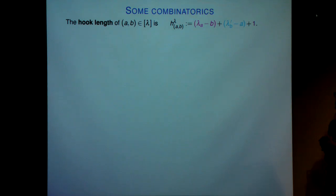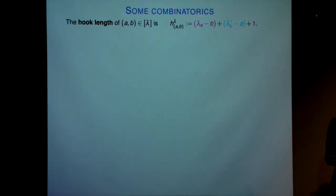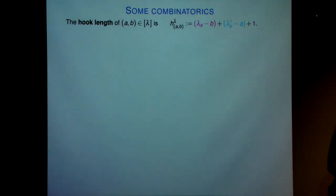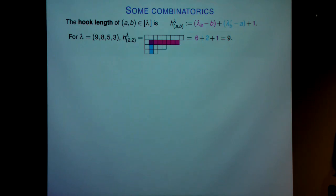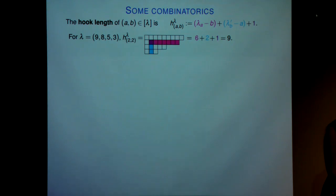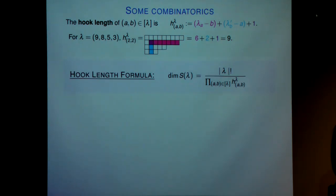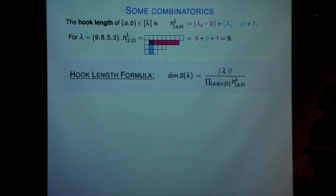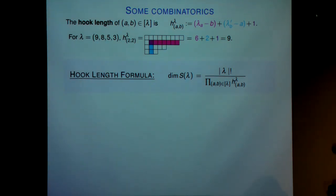Now we're going to look at some combinatorics. In the representation theory of the symmetric group and associated algebras, hook lengths play an important role. This is given by taking a hook — which has an arm and a leg and the node — and that is the hook length of the node in a Young diagram. Looking at the partition (9, 8, 5, 3) with its corresponding Young diagram, the hook length of the node highlighted in purple is precisely the sum of all the highlighted boxes. One of the things we can use hook lengths for is to count the standard tableau — we have a celebrated hook length formula, so we can easily compute the dimensions of our standard modules in terms of hook lengths.